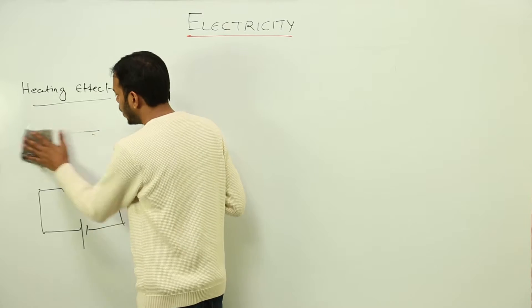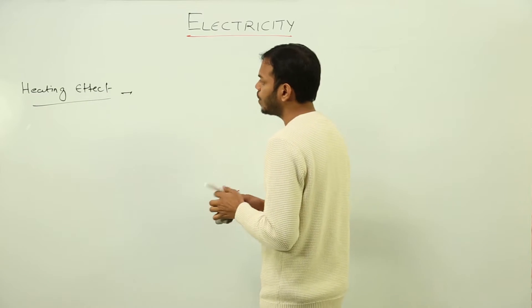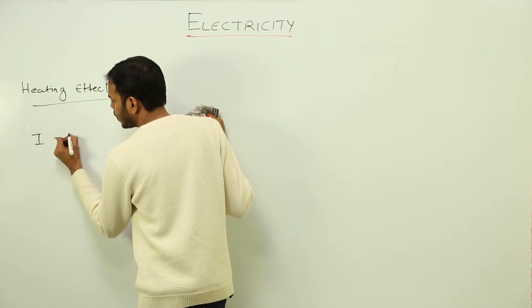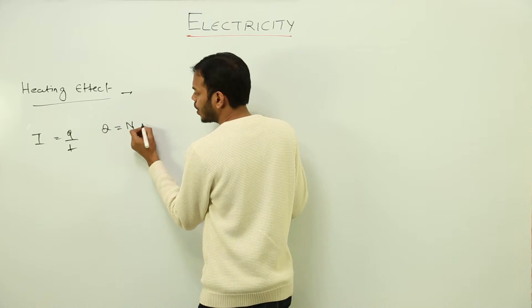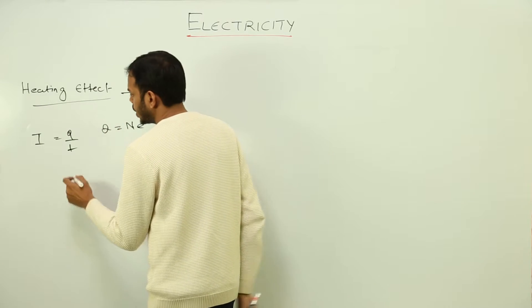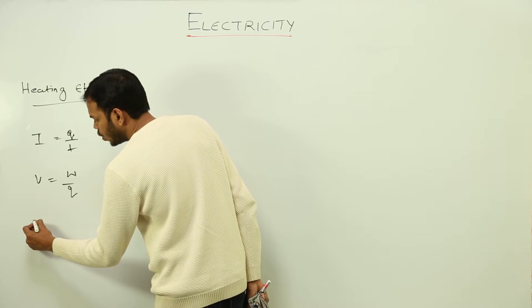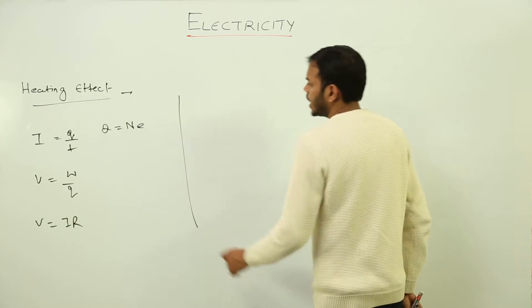So let's derive a formula for heating effect. What are the formulas we know till now? First of all, we know that current is rate of flow of charge, total charge is number of electrons into electronic charge. Then we know V is work done upon charge, and then we know voltage is current into resistance.